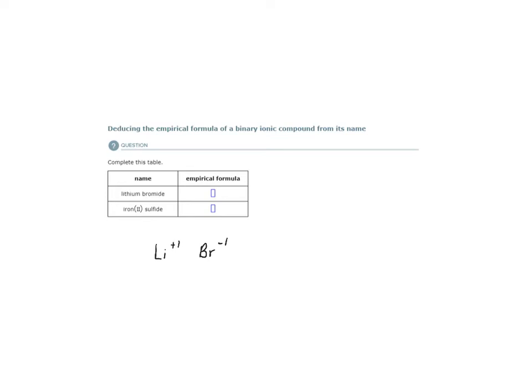So now that we have this, we can do exactly what we did in the previous topic. We can use the crisscross method for my cation and anion to figure out what these subscripts would be in the empirical formula. Li1, Br1, which simplifies to LiBr.